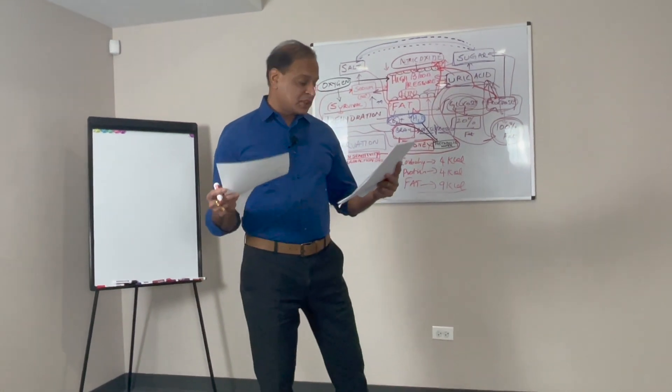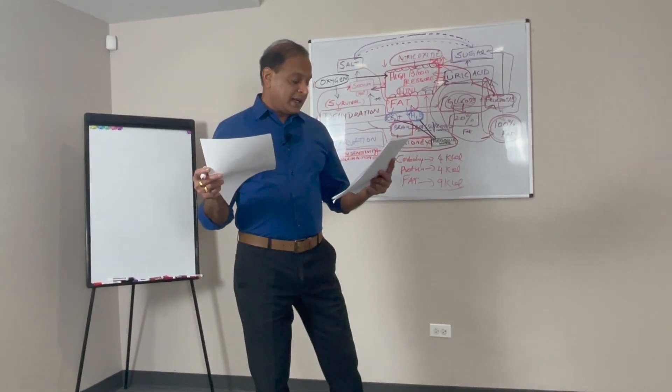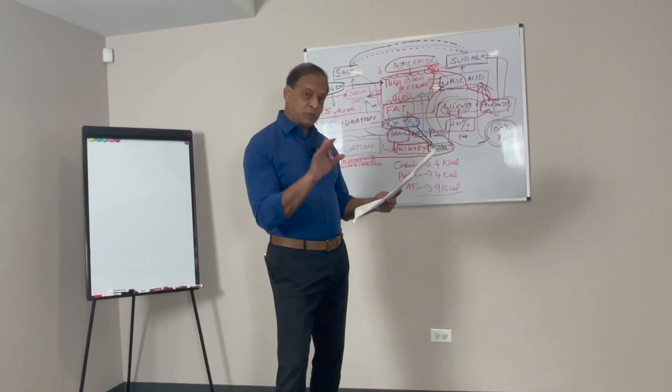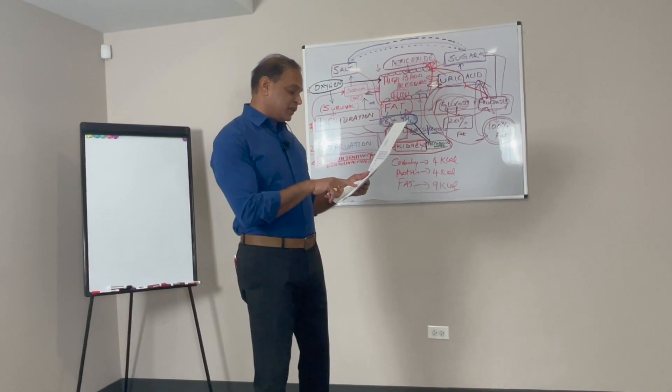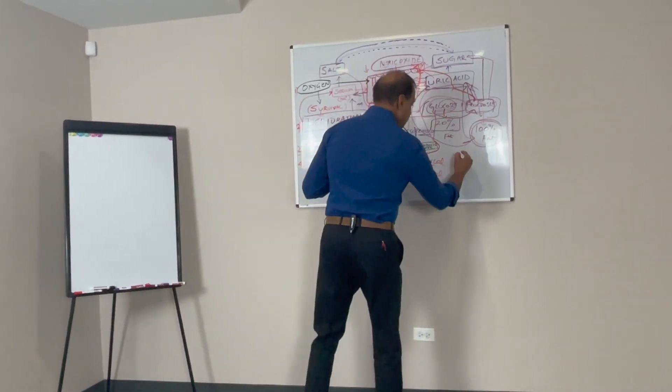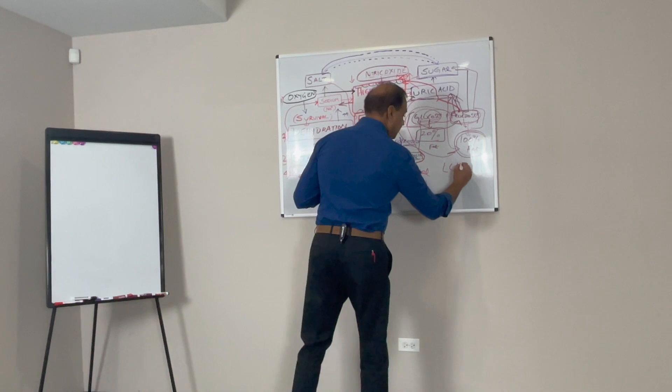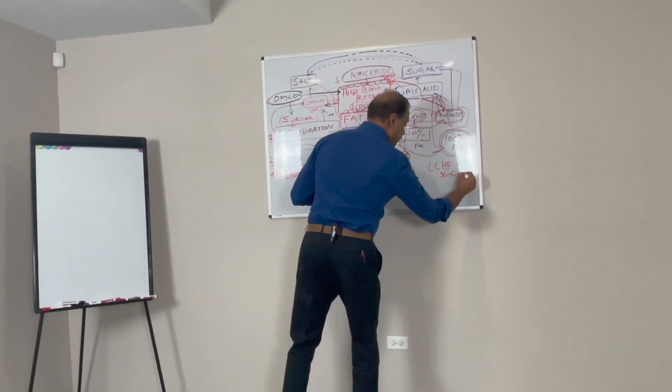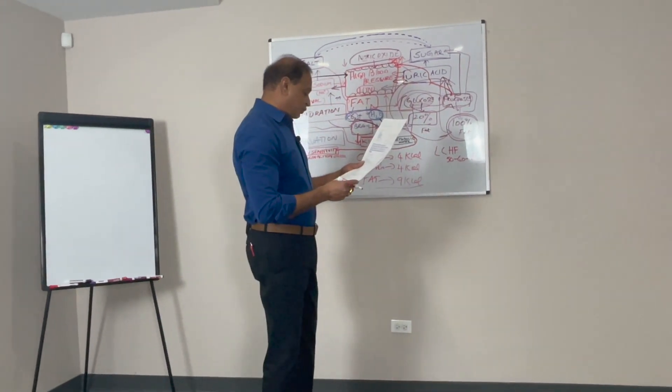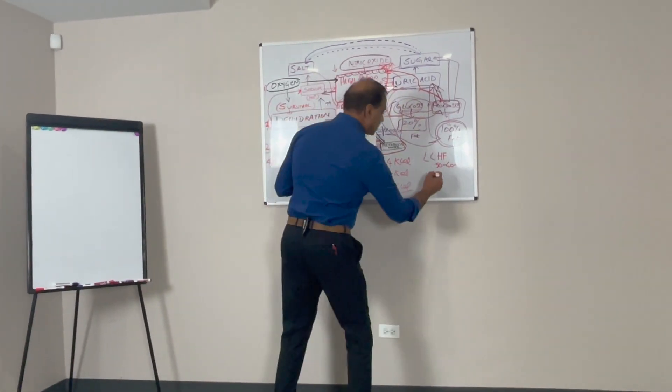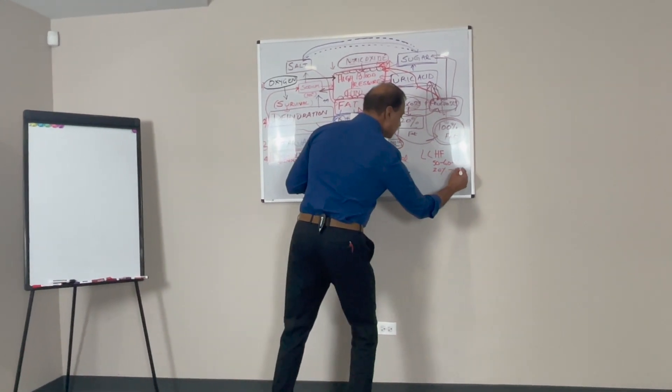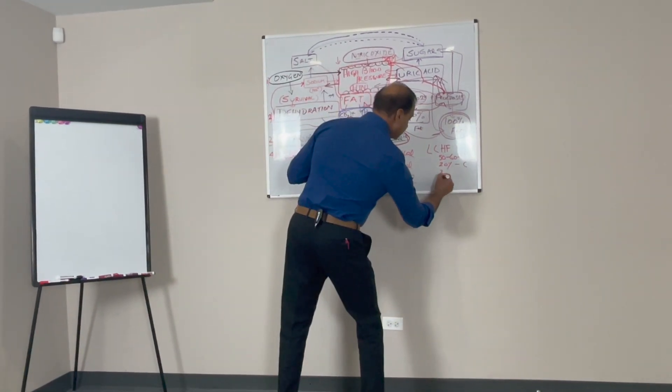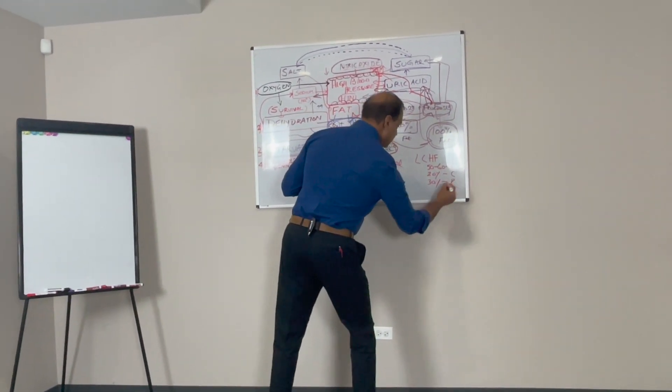There were 165 participants. Low carbohydrate high fat diet had 50 to 60 percent of energy from fat, 20 percent from carbohydrates, and 30 percent from protein, adding up to 100 percent.